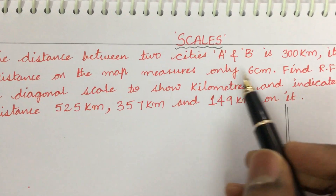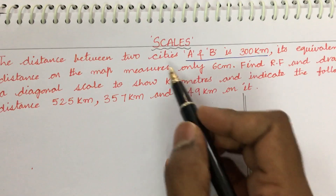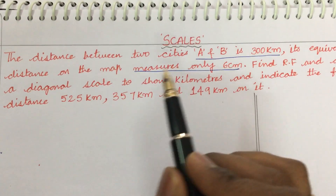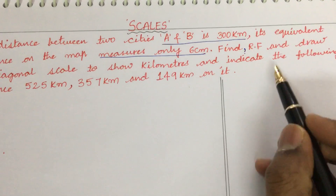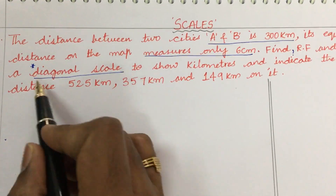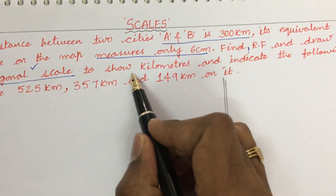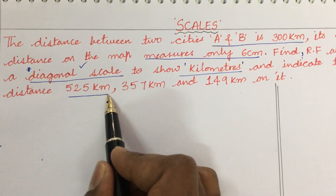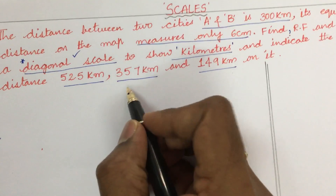The distance between two cities A and B is 300 kilometers. Its equivalent distance on the map measures only 6 centimeters. Dear students, I am underlining these key values — underline along with your pencil in the question paper while reading the question, so that it makes understanding very easy. Find RF — this is the question mark — and draw a diagonal scale. Here it is directly specified in the question that it is a diagonal scale, to show kilometers, and indicate the following distances: 525 km, 375 km, and 149 km on it.